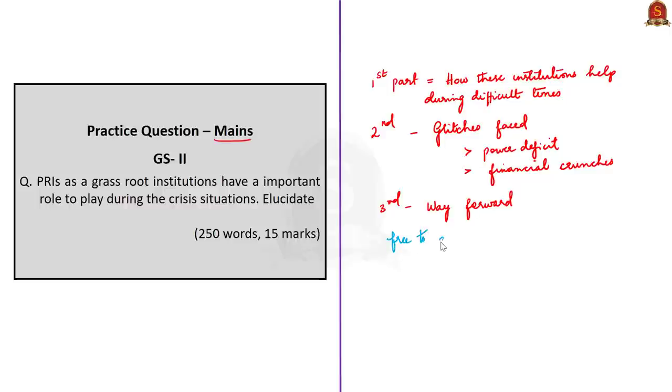Coming back to the question, when you have a question like this, the focus of the first part of your answer should be on how these Panchayati Raj institutions help in times of disease outbreaks or disasters. Then in the next part, introduce some glitches that these PRIs face, like financial crunches, power deficit, etc. In the third part, finish the answer by giving some way forwards. You should also feel free to add more points and case studies to enrich the essence of your answer.